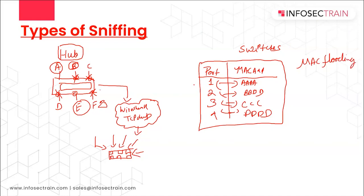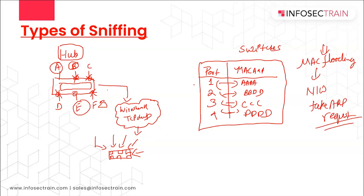The key difference between hub-based sniffing and MAC flooding is: in hub-based sniffing, the attacker only makes changes on their own system. In MAC flooding, the attacker sends fake ARP requests to the network device — the switch — causing changes there. This distinction leads us to the two types of sniffing: passive and active.